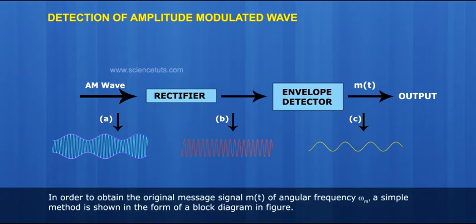In order to obtain the original message signal m(t) of angular frequency omega m, a simple method is shown in the form of a block diagram in figure.